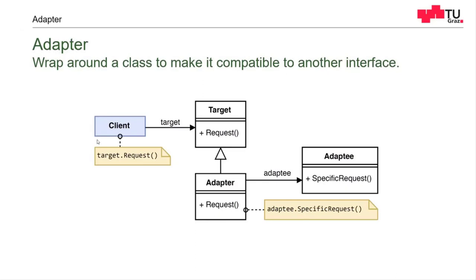So what is the core idea of the adapter? We want to wrap around the class to make it compatible to another interface. The problem is that we have two interfaces which are not fitting together, and we somehow want to make them fit. For that, the adapter is a good idea. We have an adaptee, which is our original class — the class we cannot change, or which we want to use, but which has the wrong interface. That's why we create an adapter around it, which wraps the original adaptee and makes a different interface out of it.